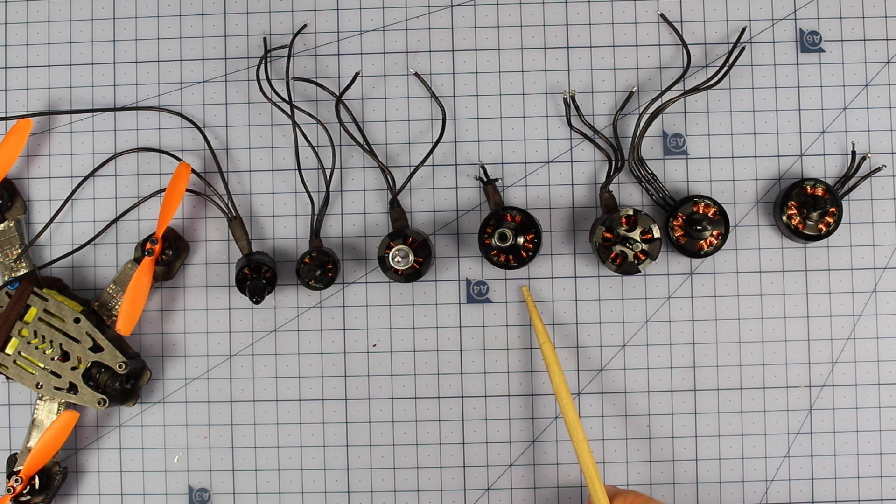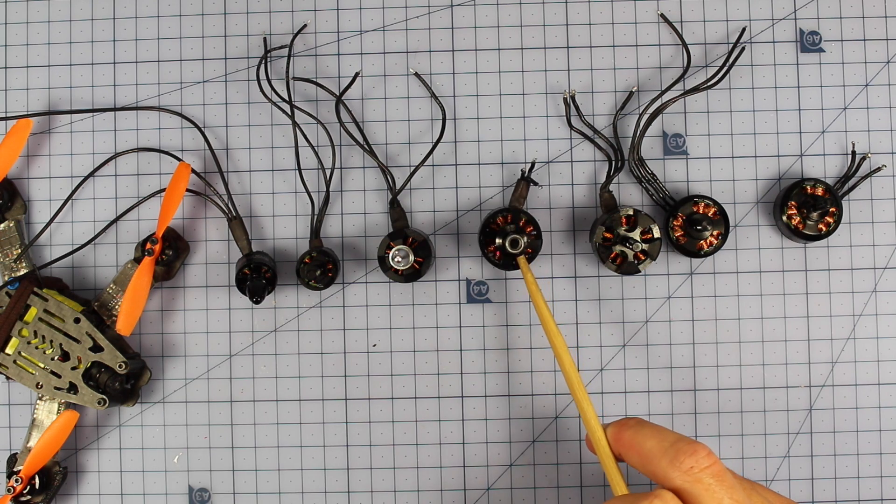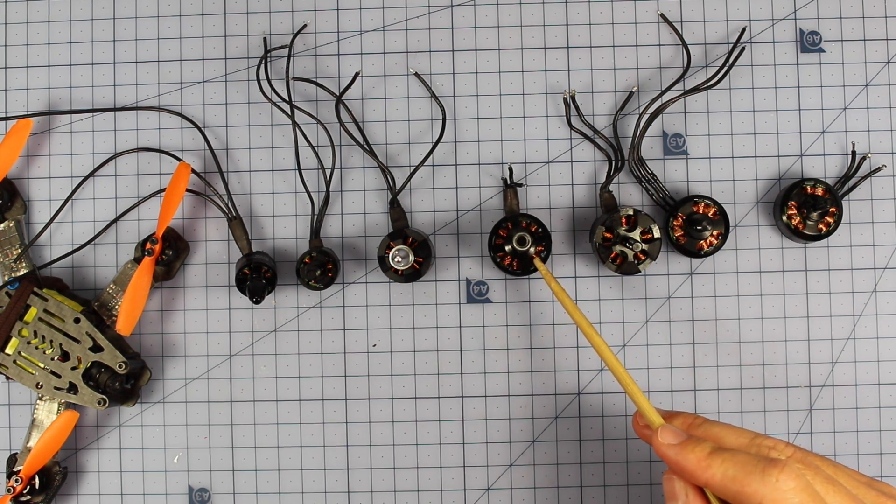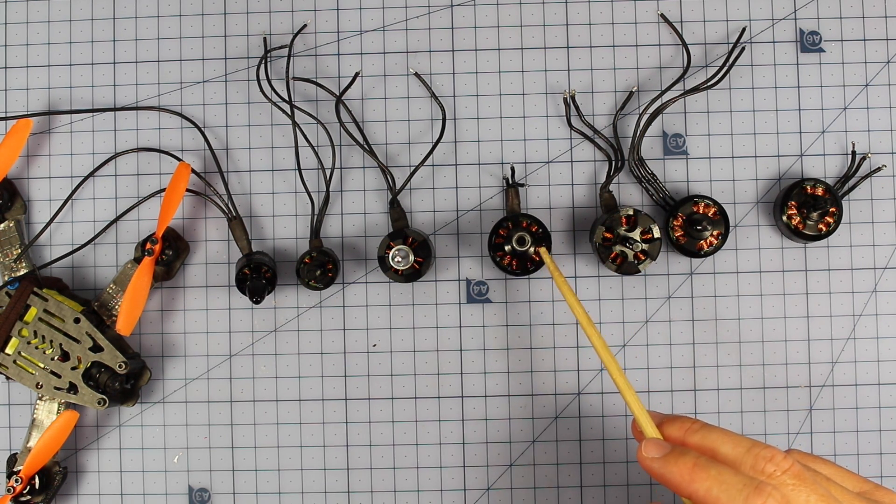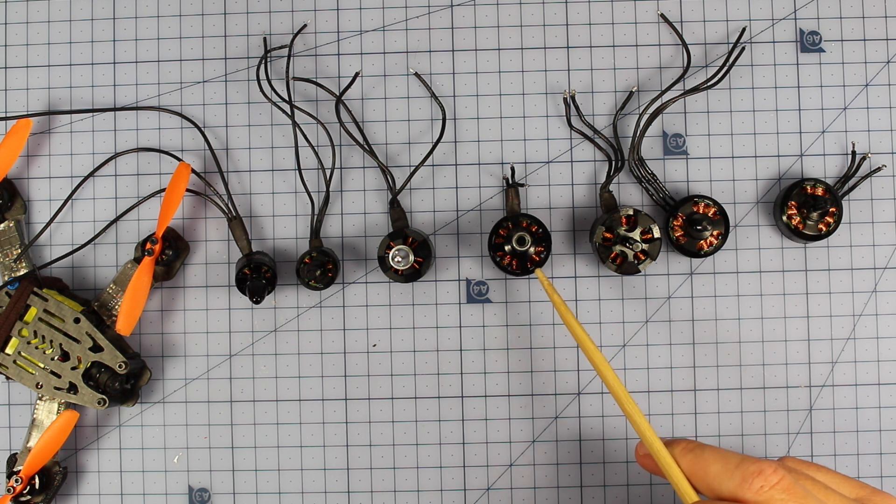Moving down here, we have the RCX 2205 2633KV motor. You notice that is a lot higher KV than these ones. This is 2300, this is jumping up to 2633KV. This one's probably best suited to say a four inch bullnose prop, or a four inch tri bullnose, or even just a five inch prop. That's probably what would be best for this one.